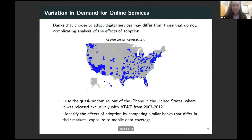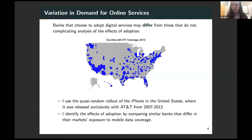The second component of my paper is that I need to find variation in demand for online services to identify the effects I'm interested in. This is because banks that choose to adopt digital services may differ in unobservable ways from those that do not, which can complicate my analysis. So I use the quasi-random rollout of the iPhone in the US, where it was released exclusively with AT&T for the first five years. I can identify the effect of adopting online services by comparing similar banks that differ only in their markets' exposure to mobile data coverage.